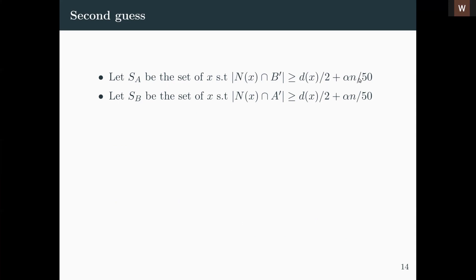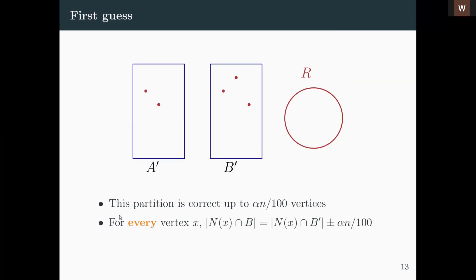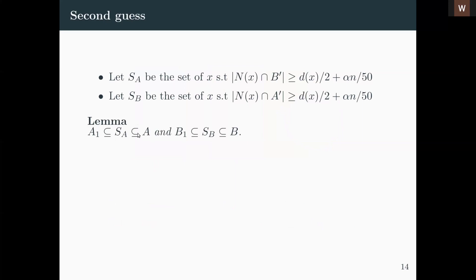We define S_A as the set of vertices where |N(x) ∩ B'| is large — larger than deg(x)/2 + alpha*n/50 — and symmetrically S_B where the degree estimate in A' is large. We can show that S_A is a subset of A, and moreover S_A contains all points in A₁ (the vertices in A well separated from B). Similarly for B₁. So we correctly and completely assign all vertices outside L, making no mistakes — and this is due to the second-round refinement.